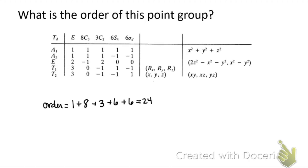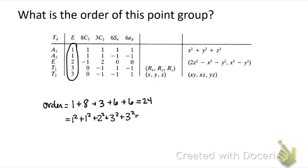Summing the squares of the dimensions for the Td point group: one squared plus one squared plus two squared plus three squared plus three squared, which also equals twenty-four.